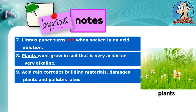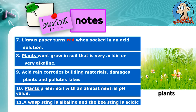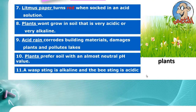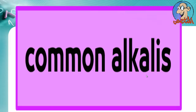Number 5: Acid rain corrodes building materials, damages plants, and pollutes lakes. Plants prefer soil with an almost neutral pH value. Number 6: The wasp sting is alkaline and the bee sting is acidic.